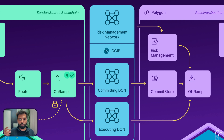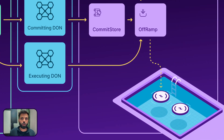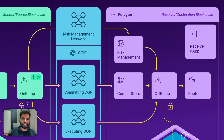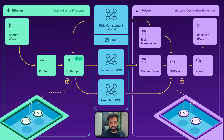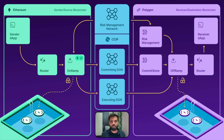Once that matches, the off-ramp smart contract executes the CCIP transaction. If it had a token transfer, it will call the token pool to unlock the tokens, or if it's a native token on the receiving chain, it will call to mint the token. The request then goes to the router smart contract on the receiving chain, and from there it goes to the destination, which can be a smart contract or an externally owned address.